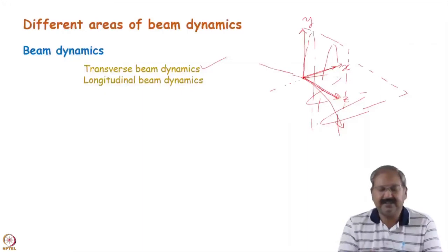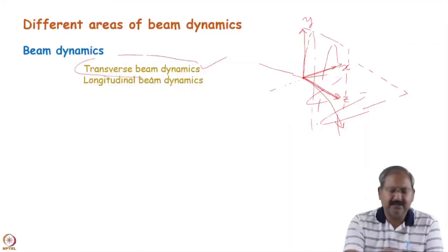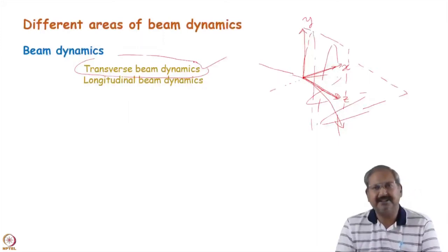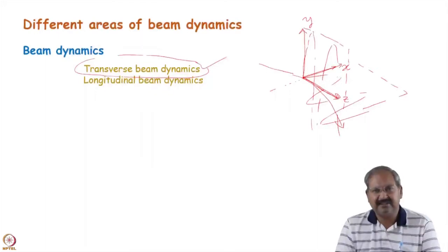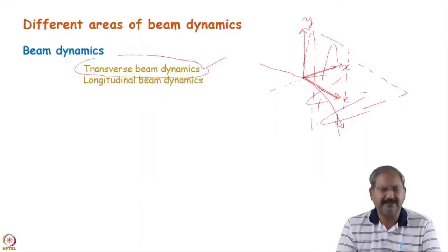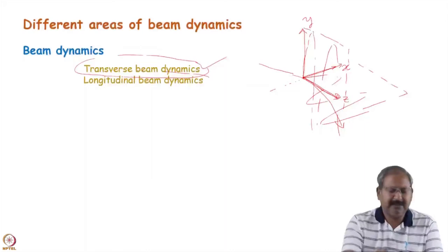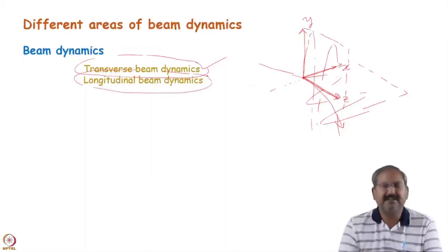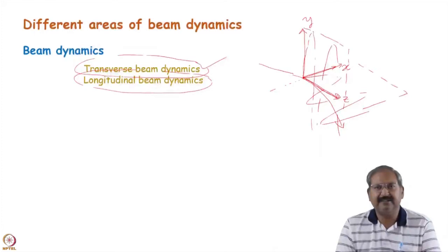Transverse beam dynamics is mainly governed by the arrangement of the magnets - how we are arranging the quadrupole magnets, what is their strength, what is the length of the drift space, what kind of dipole magnet and what is the bend angle, and how the periodicity is arranged in the optics. Longitudinal beam dynamics is mainly governed by energy manipulation of the particle.